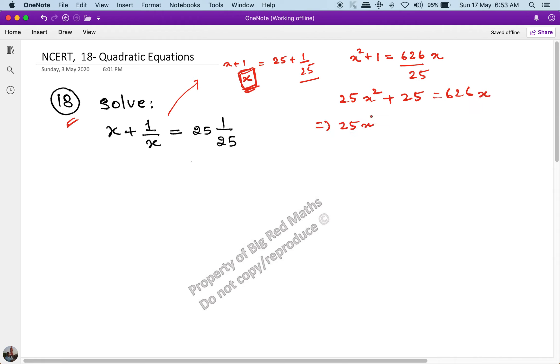25x squared minus 626x plus 25 is equal to 0. So, now it's very easy to solve this. I know how this will factor. 25x squared minus 625x minus x plus 25 is equal to 0.